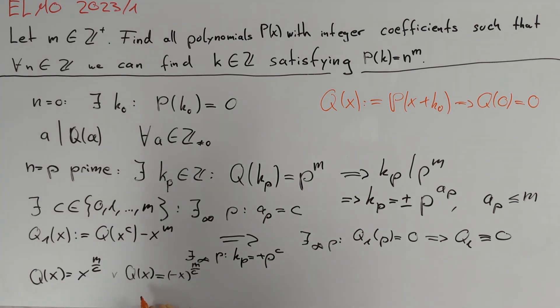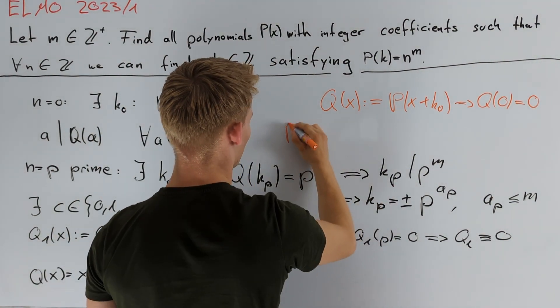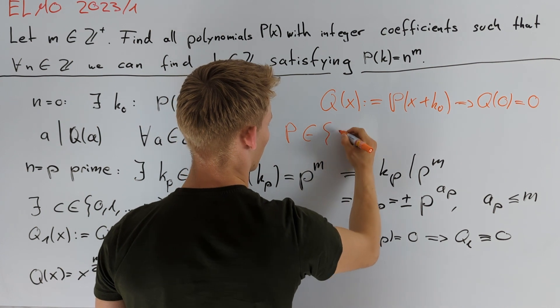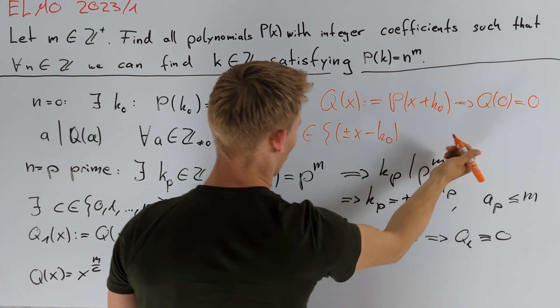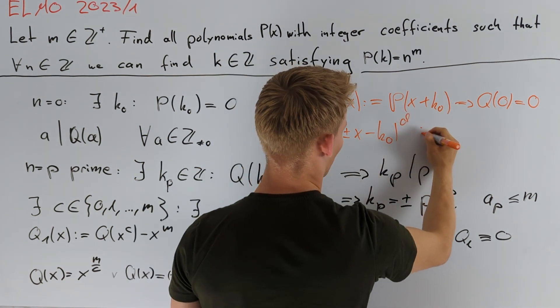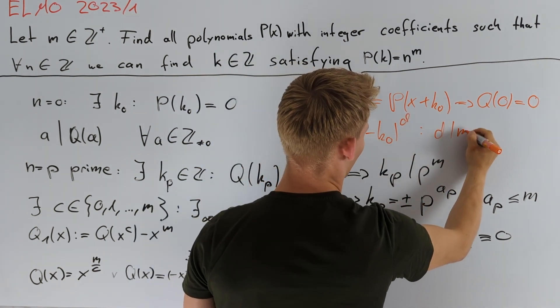Since Q is a polynomial we know that m divided by c must be an integer and therefore c is a divisor of m. So in total we know that every solution P is in the set of polynomials of the form plus minus (x - k₀) to the power of d where d is a divisor of m.